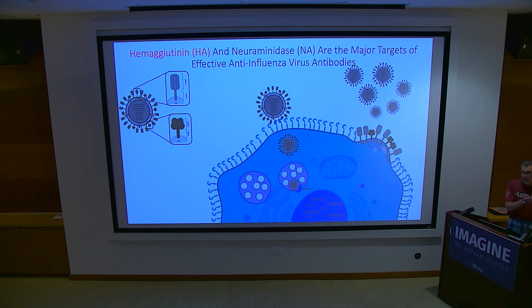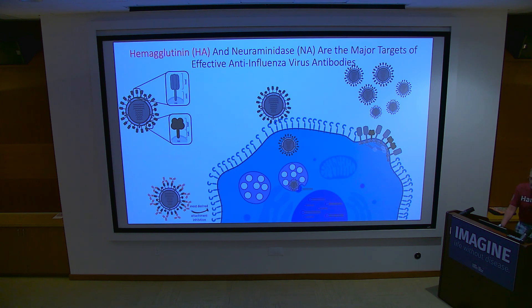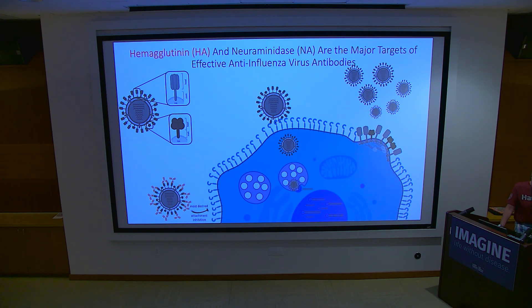There are about 500 HA trimers and 50 NA tetramers — a 10-to-1 ratio. For reasons we don't understand, the NAs are in little islands of three or four, not scattered randomly. The hemagglutinin binds sialic acid, an incredibly ubiquitous molecule. Different species have different sialic acid linkages.